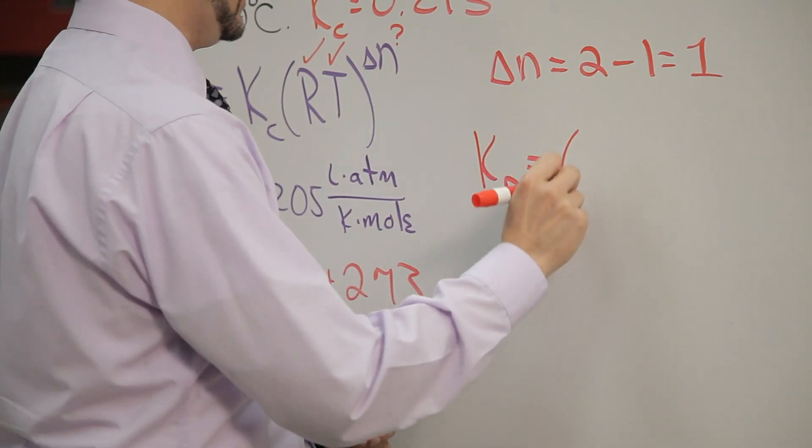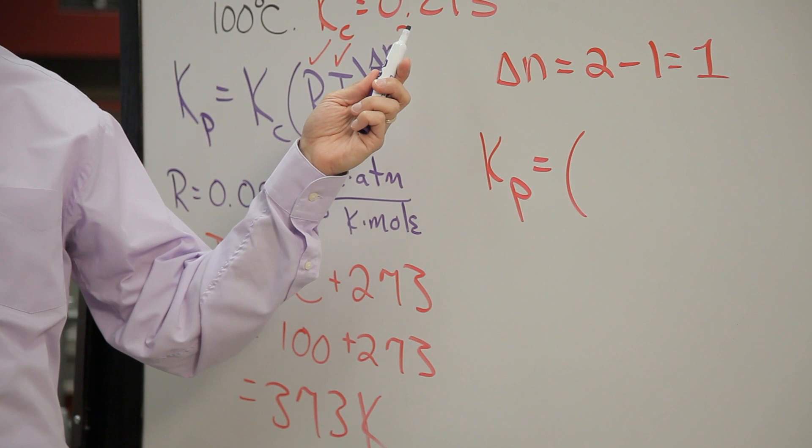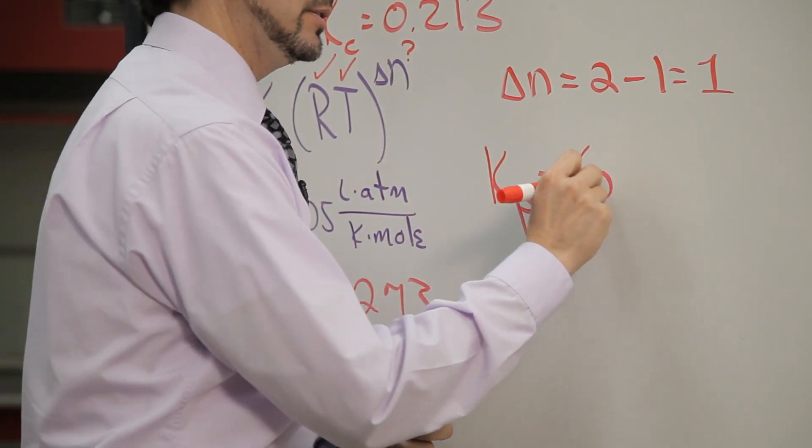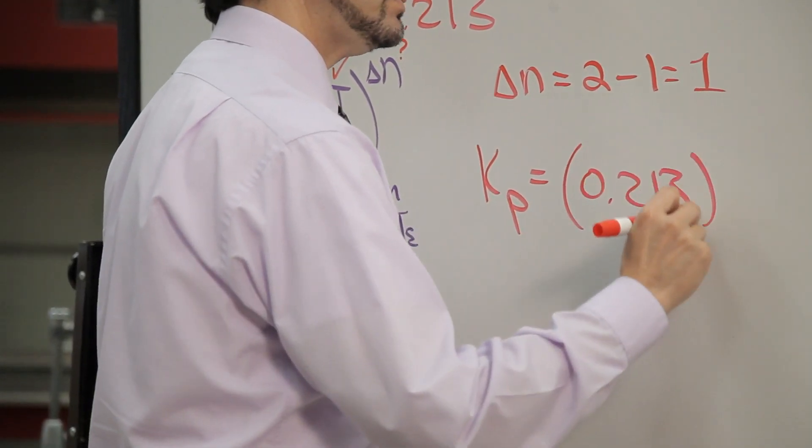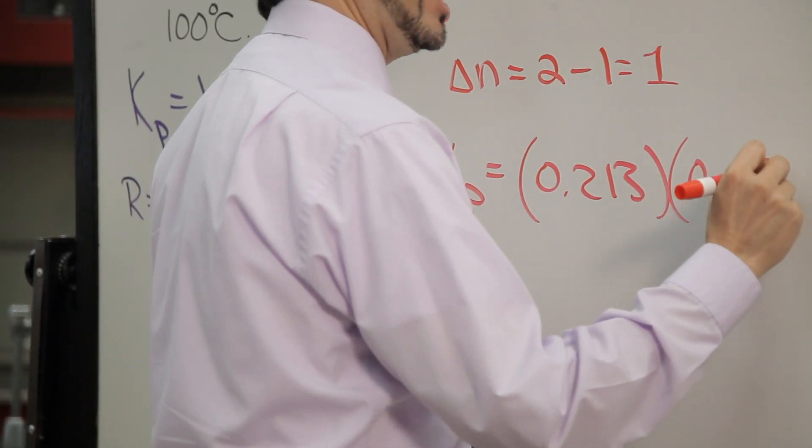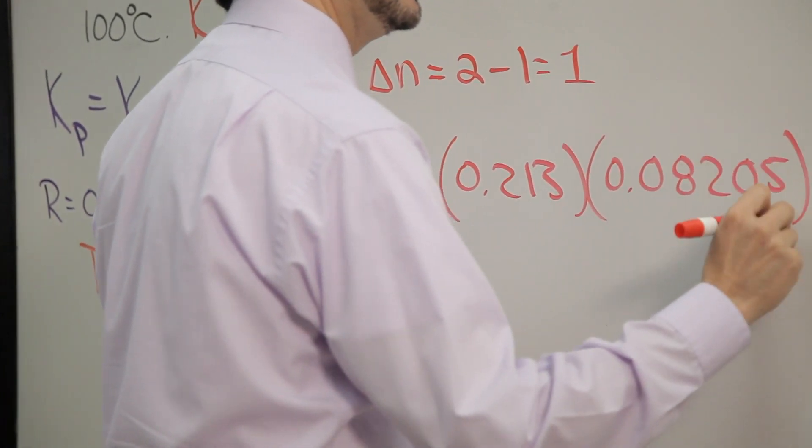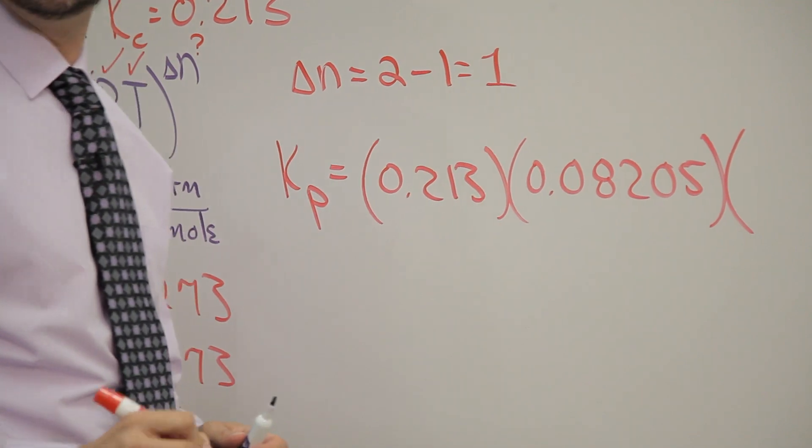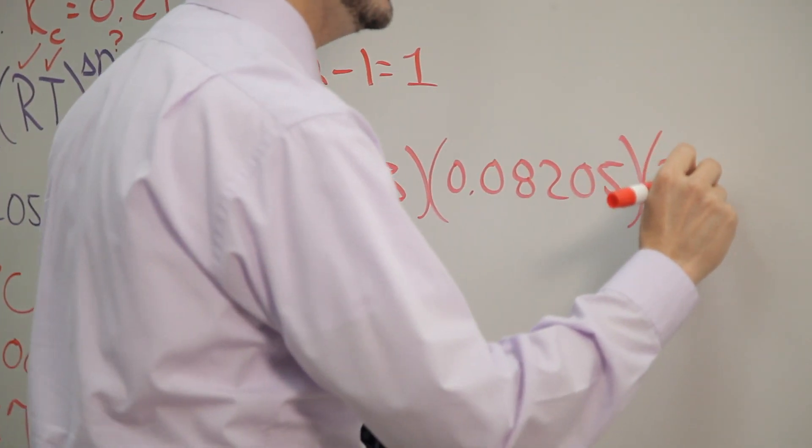K sub P equals K sub C, 0.213, times R, 0.08205, times T, which is 373.